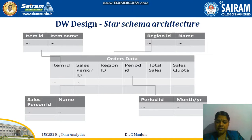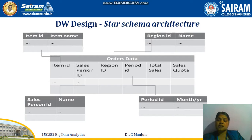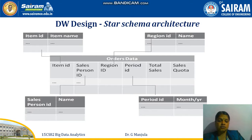By using this central table, we can access different types of information. For example, using the salesperson ID, we can find the name of the person, their employee ID number, and their region — which region that particular salesperson has sold the product in. We can also find the region ID, region name, product, sales quota, and total number of sales.